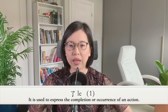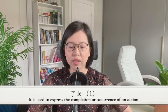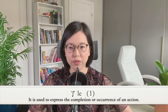In our beginner course, we have mentioned the particle 了 used to express a completion or occurrence of an action. 了 can be used either at the end of a sentence or between a verb and its object.